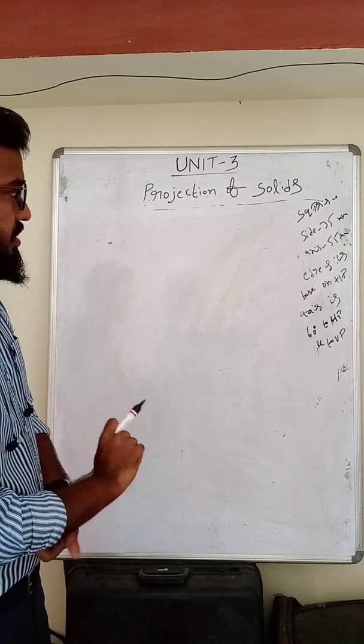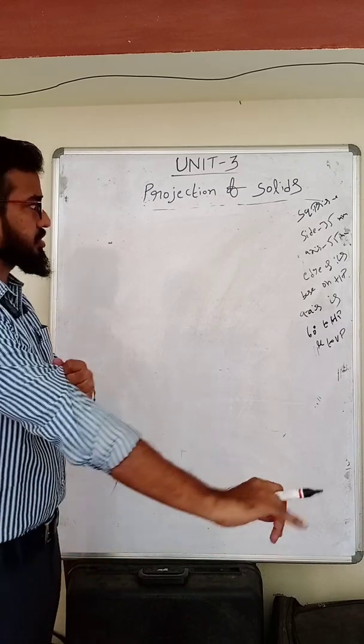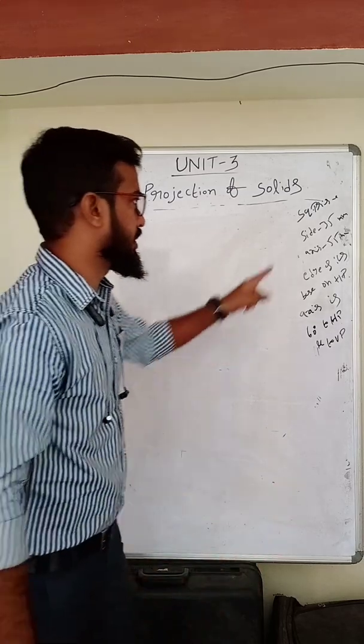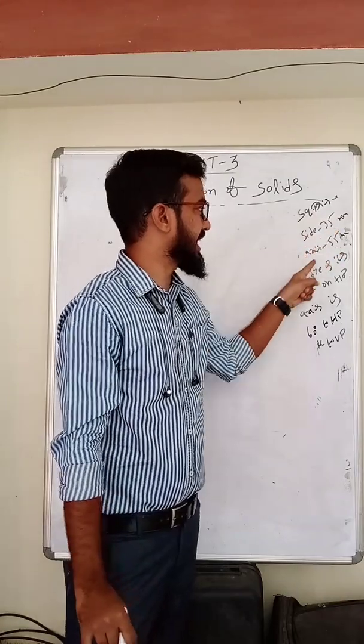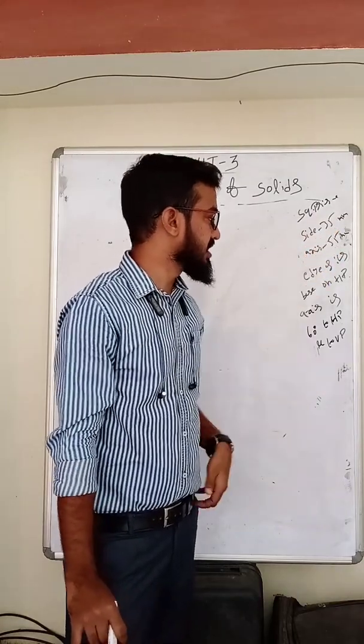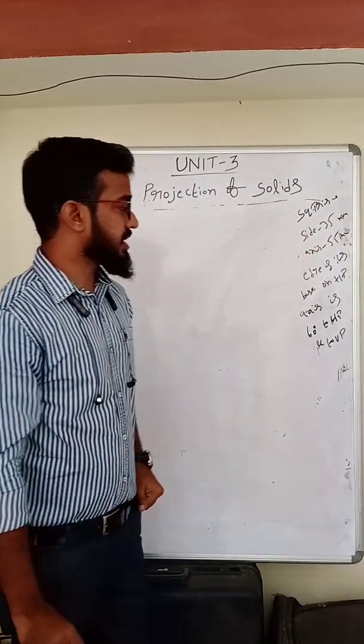Listen here. So here it is the same — the solid, that is the square prism, which is having a given side and axis.